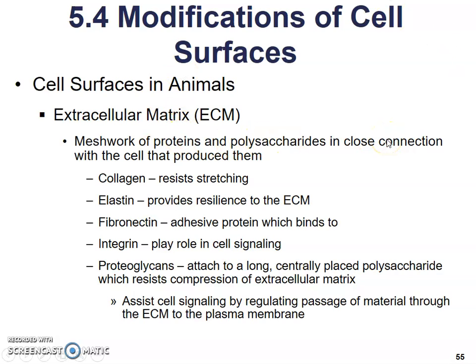Collagen resists stretching, which is why you'll hear a lot of makeups and creams promote collagen — it helps keep skin looking younger and keeps it from stretching, drooping, and developing wrinkles. Elastin does a similar thing: it provides resilience and keeps your skin able to bounce back. Fibronectin is an adhesive protein which binds to integrin and plays a role in cell signaling.